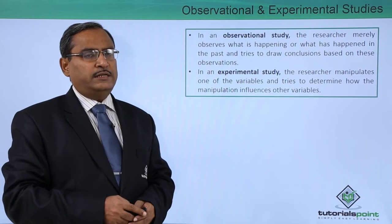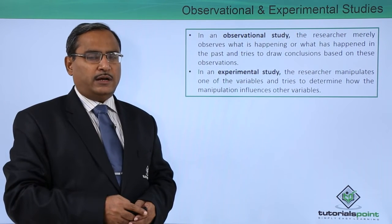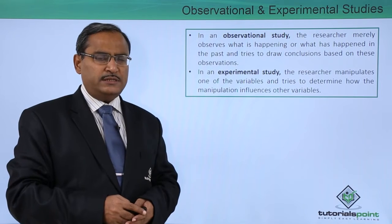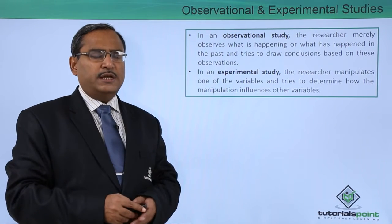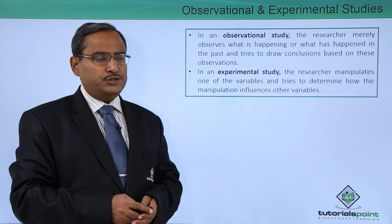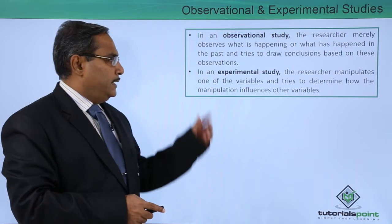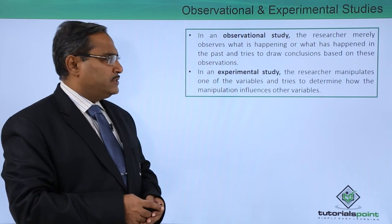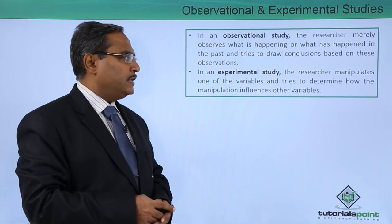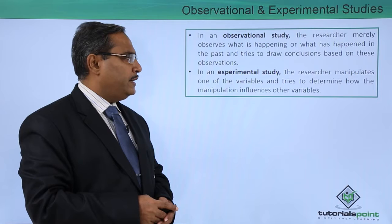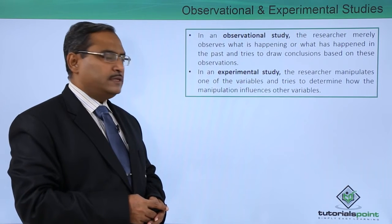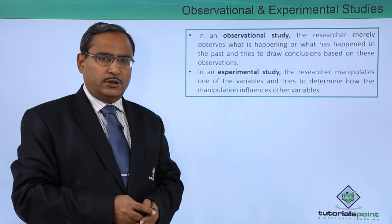In an observational study, the researcher will be concerned with the past observations and the present observations, and from there they will draw the conclusion. In an experimental study, the researcher manipulates one of the variables and tries to determine how the manipulation influences the other variables.